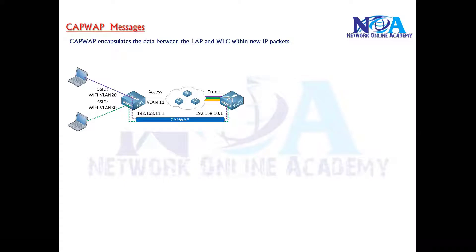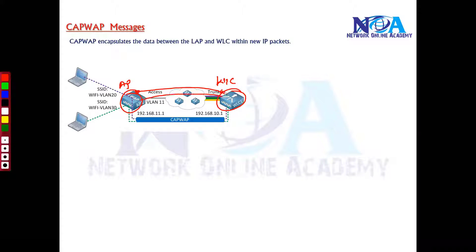The next thing we'll try to understand about CAPWAP messages is that, as previously discussed, the access point is going to discover the WLC, then join that WLC, and then build CAPWAP tunnels. These tunnels are established between the access point and the WLC and encapsulate the data moving between them, carrying 802.11 related data and client data information.